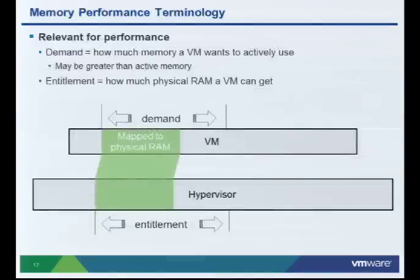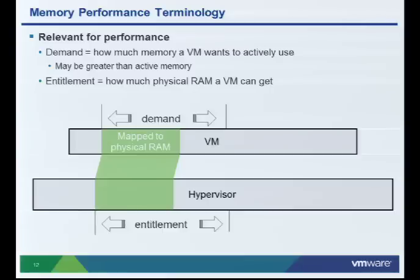Now, a couple of important concepts, especially for performance. The first concept is demand — essentially measuring how much memory a VM wants, how much it wants to actively use. And entitlement is how much physical RAM a VM can get. The concept of entitlement is essentially the hypervisor figuring out: I've got all these VMs running on me, how much memory do I give to each of them? How much it doles out is the entitlement. Demand is what the VM wants to use, and entitlement is what it is allowed to use — the maximum it's allowed to use by the hypervisor.